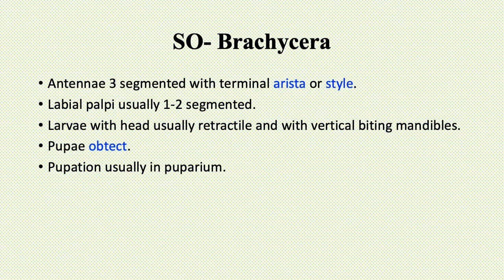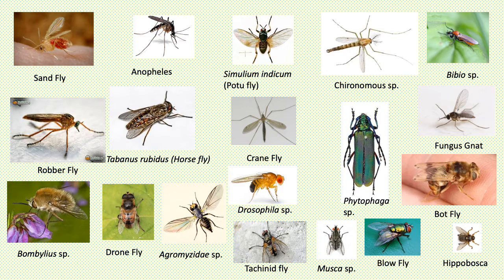In suborder Brachycera, the antennae are three-segmented with a terminal arista or style. Labial palpi are usually one or two segmented. The larval head is usually retractile with vertical biting mandibles. Pupae are obtect and pupation usually occurs in a puparium.